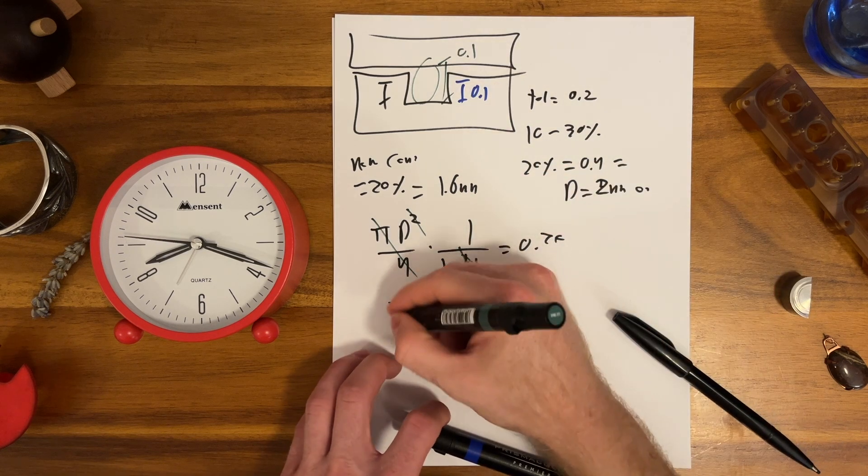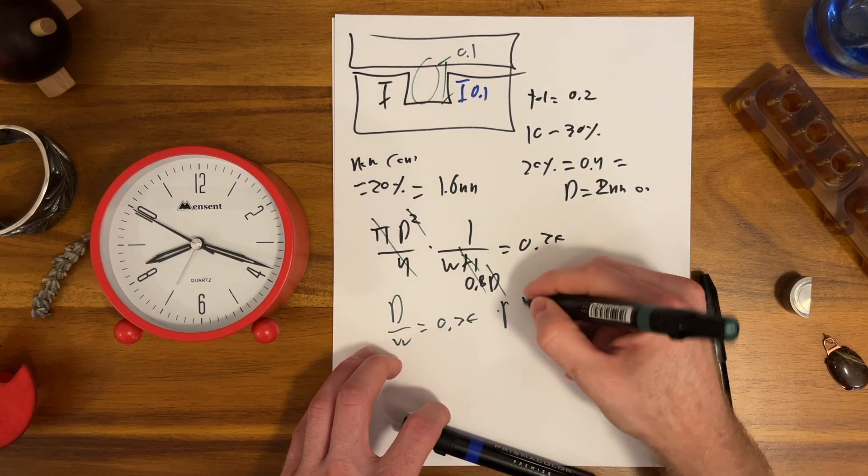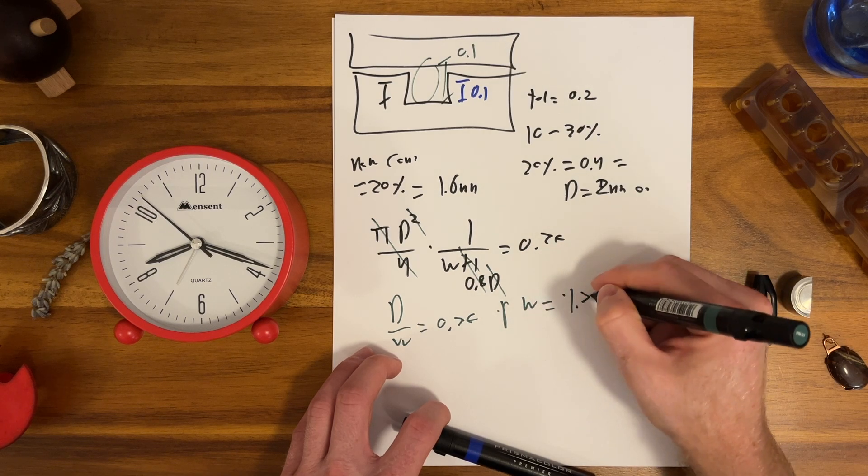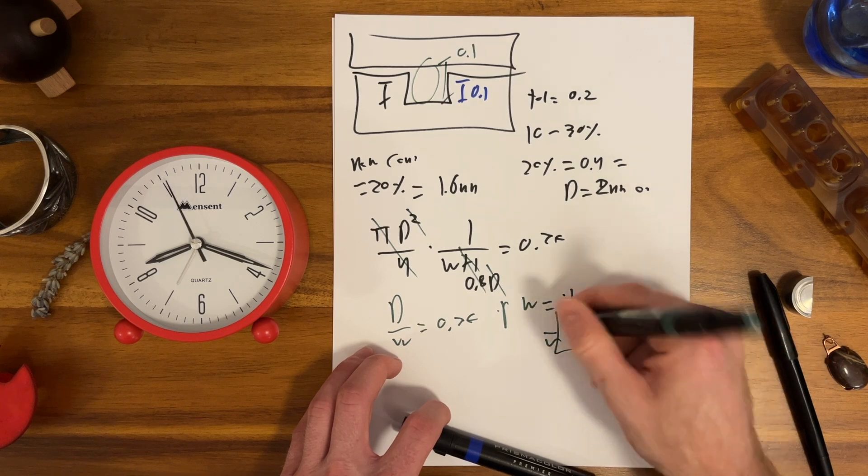Pi over four is 0.8. So d over w equals 0.75. That means w equals 1.33 times d, about 2.6 millimeters groove width, and you're done.